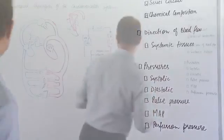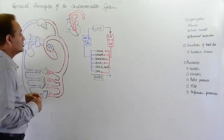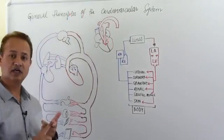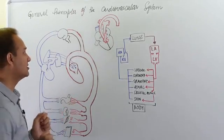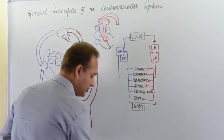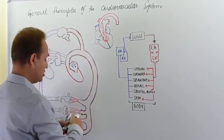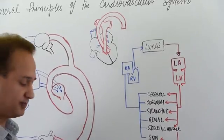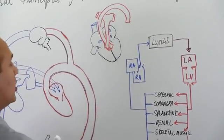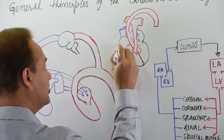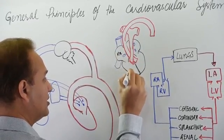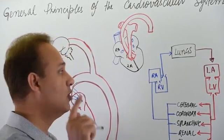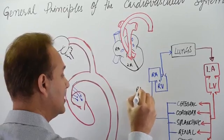The USMLE wants you to know the heart's chambers, the valves, and how blood flows through those chambers — so this is that lecture. The heart has four chambers. The first functional unit is the right heart, consisting of the right atrium (RA) and right ventricle.